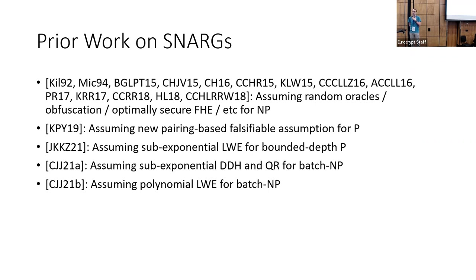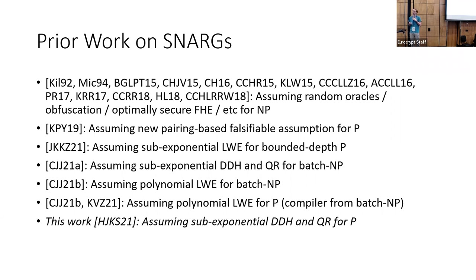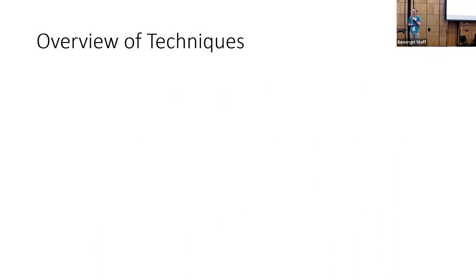The next two important works are a pair of papers by Choudhuri, Jain, and Jin, which instead of considering deterministic computations directly, considered languages that can be understood as batch NP statements, and showed that either under sub-exponential DDH and QR, or under polynomial LWE, we can get SNARKs for these sorts of languages. This latter paper, along with a separate work of Kalai, Vaikuntanathan, and Zhang, shows that under polynomial LWE we can take SNARKs for batch NP and turn them into a SNARK for deterministic computation. What we want to do in this work is essentially do something similar for the first Choudhuri-Jain-Jin paper — we show we can get SNARKs for deterministic computations based on sub-exponential DDH and QR, as opposed to polynomial LWE.